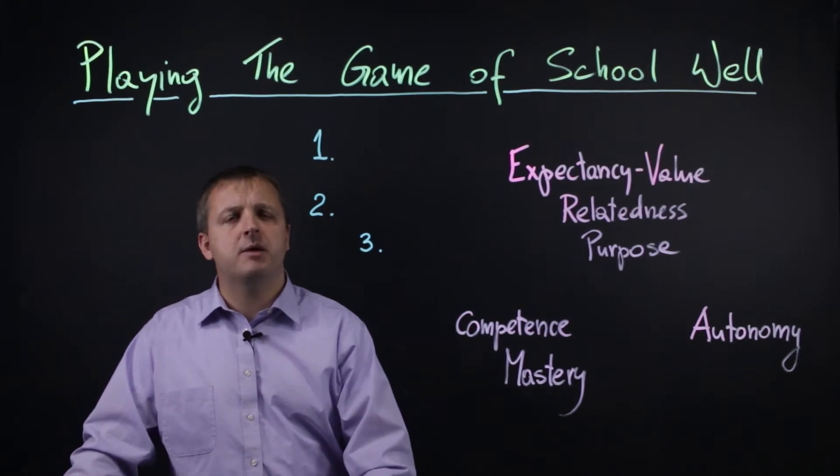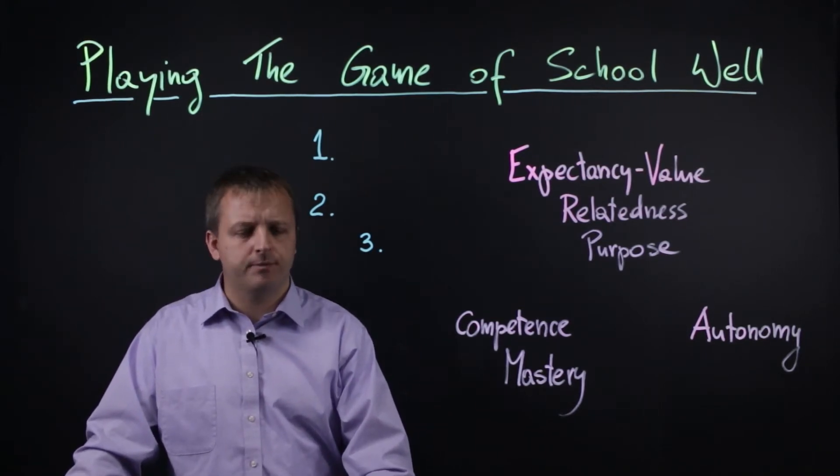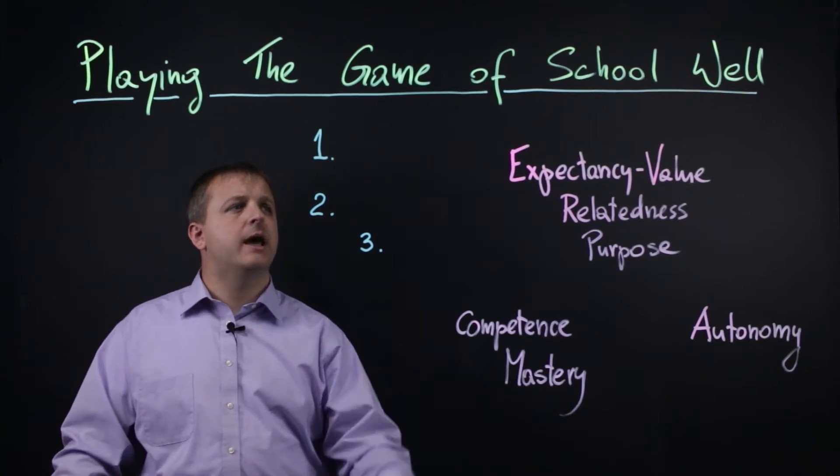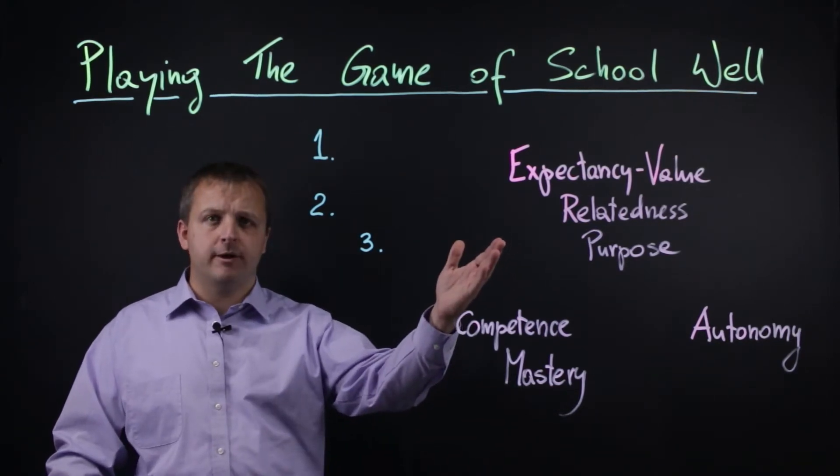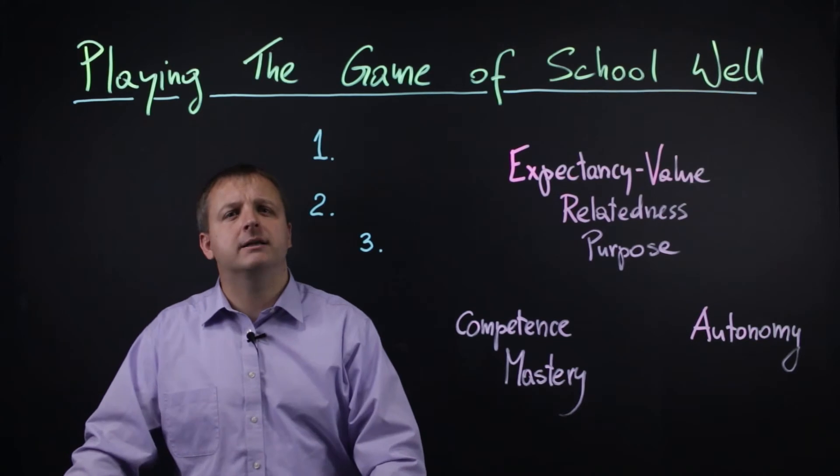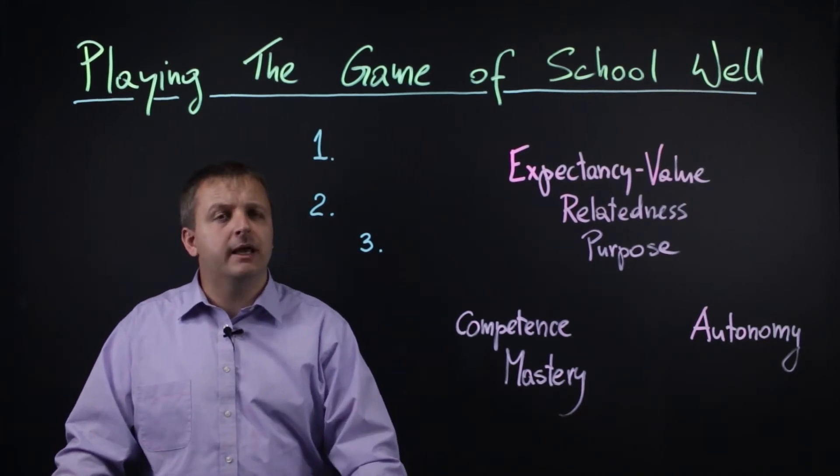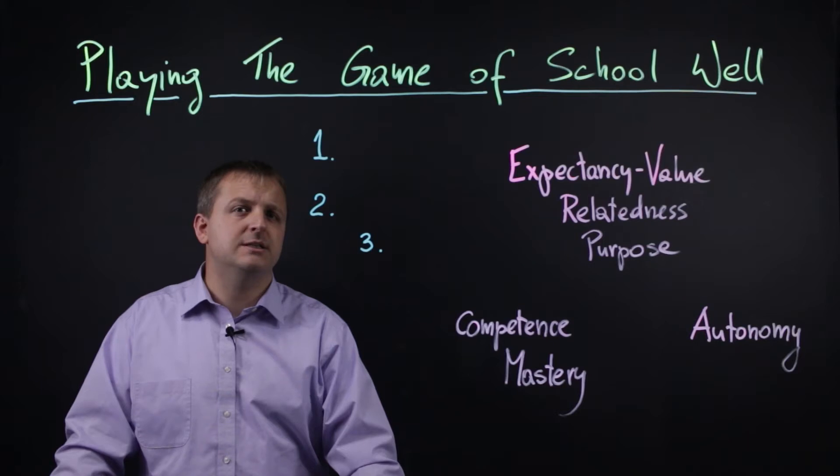So there are some things that you can do even today. First, let's go over three theories that help us understand what motivates people. The first one is expectancy value theory. This was developed by John Atkinson in the 50s, and then later by Martin Fishbrown in 1970s.